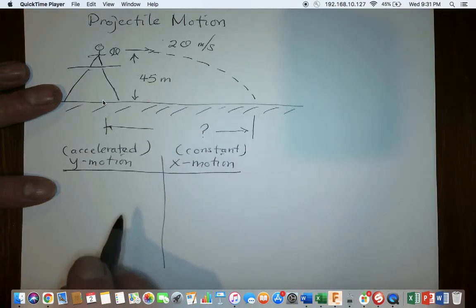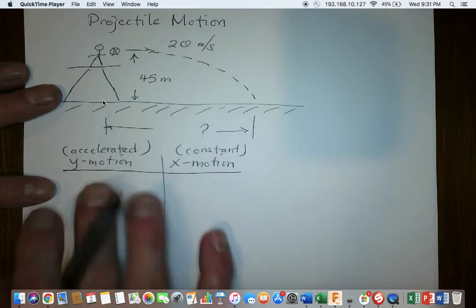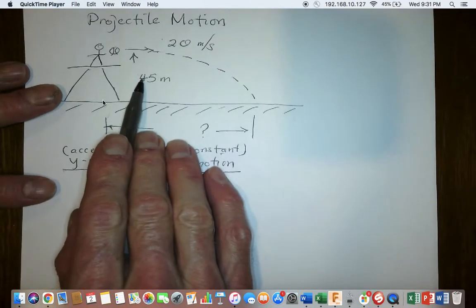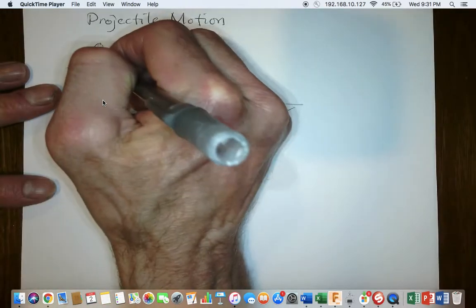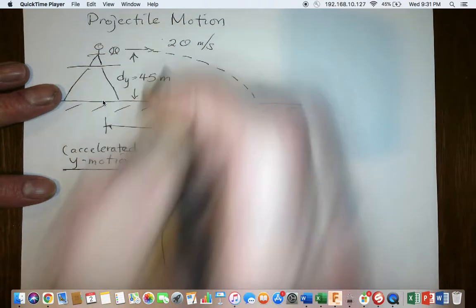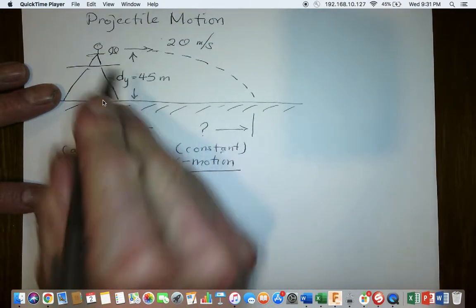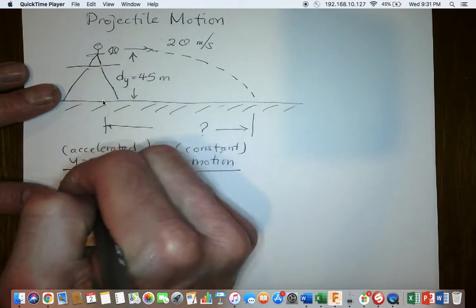My suggestion to you is that you throw in everything into these two columns that you can think of. First, let's label this thing. Let's call it the distance in the Y direction. You could call it the height, of course. I'm going to use a lot of subscripts here to label things as Y and X.